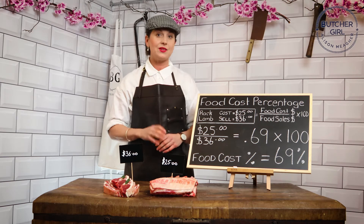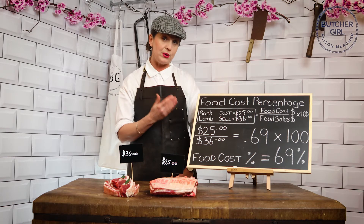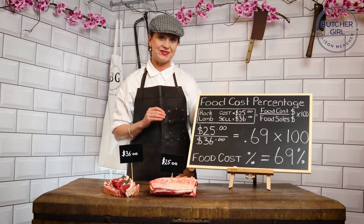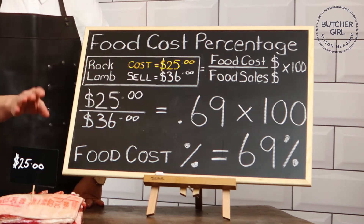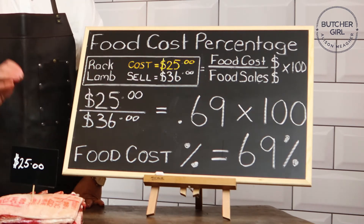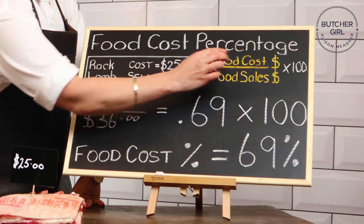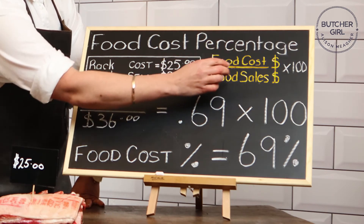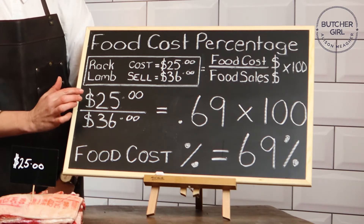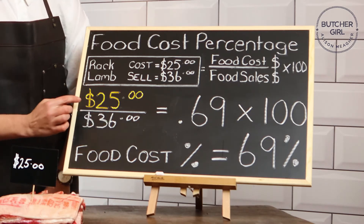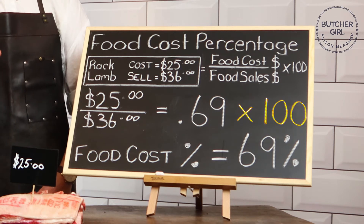In order to do this we need a formula. Here on the board I've created a formula that has broken it all down for you to understand. The rack of lamb has cost me $25 and I would like to sell it for $36. So our food cost divided by our food sales times by 100 will be our formula. So $25 divided by $36 equals 0.69 times by 100.